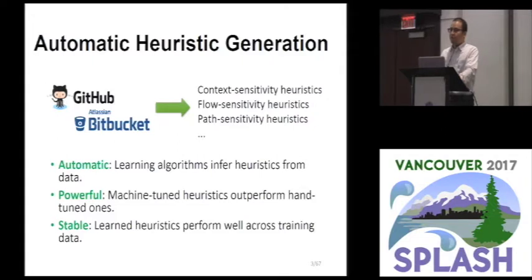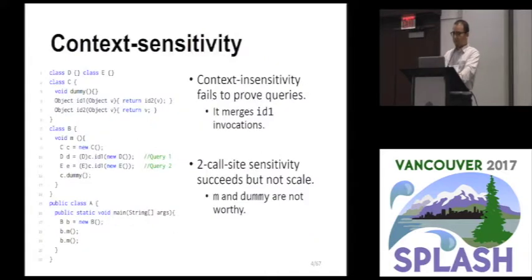Our answer to this pain point is learning good heuristics from codebase. By doing so, heuristic generation can be, at least mostly, automated. And the learned heuristics can be powerful and stable because although machines don't have deep insight as humans, they diligently and systematically find good solutions across training data. Today, I will focus on context sensitivity.